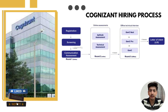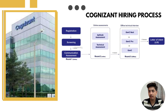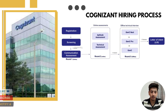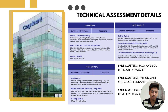In the second round of the Cognizant Gen C assessment, you will be asked to choose one skill cluster out of three available options. Think of these clusters like different technical paths based on what programming languages and tools you are most comfortable with. Here's the breakdown of all three clusters.